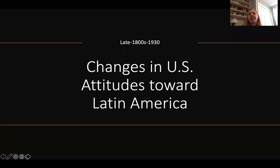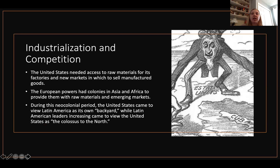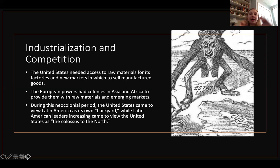From the late 1800s through the 1930s, there are some changes in U.S. attitudes towards Latin America. In the late 1880s, the United States is beginning to really increase its rate of industrialization, and it's facing competition in the international market from European powers. The United States is starting to look for access to raw materials to produce its manufactured goods, but also new markets in which to sell them. With the Europeans taking control of colonies in Africa and Asia, the United States turns to Latin America, which it comes to view as its backyard — meaning it is its domain in which to interfere.